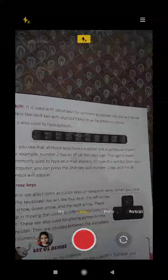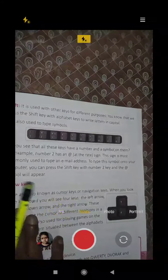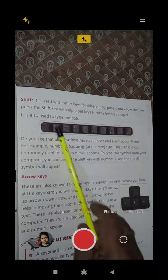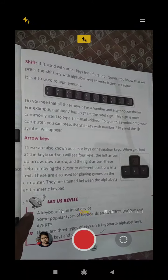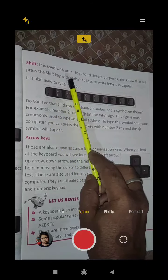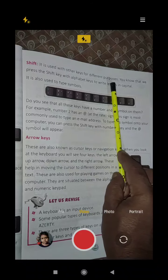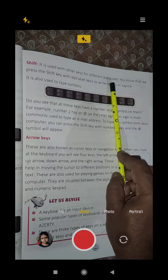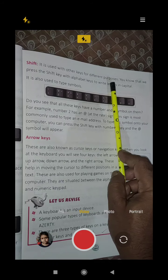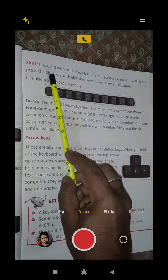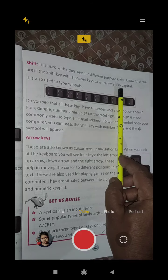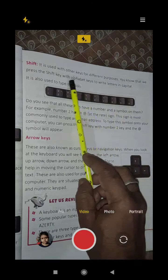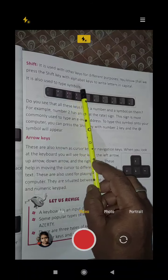Next is the shift key. It is used with other keys for different purposes. You know that we press the shift key with alphabet keys to write letters in capital. It is also used to type symbols.